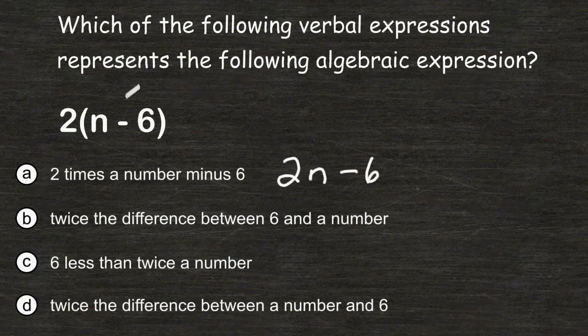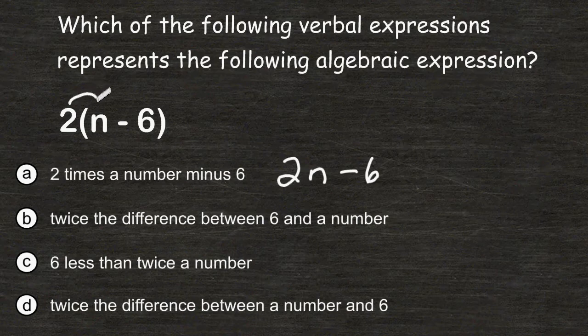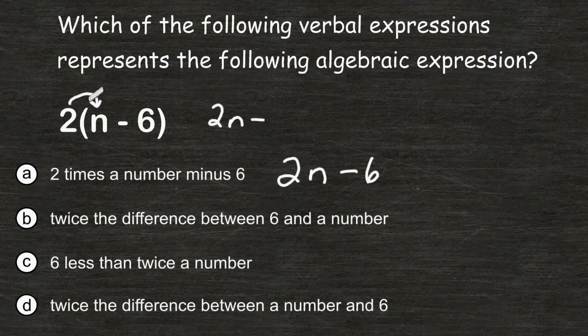That is because if you were to use the distributive property, you would have to multiply this 2 by each term inside the parentheses. So this expression is actually 2n minus 2 times 6, which is 12.